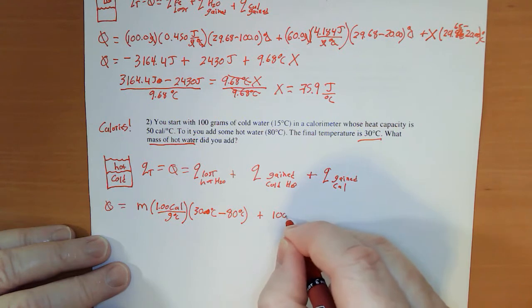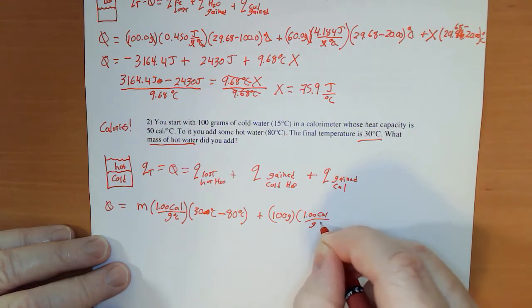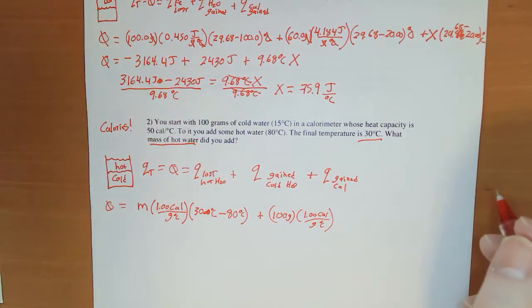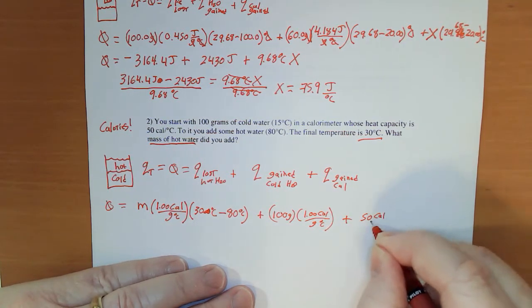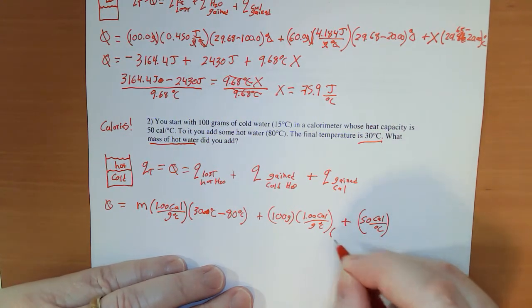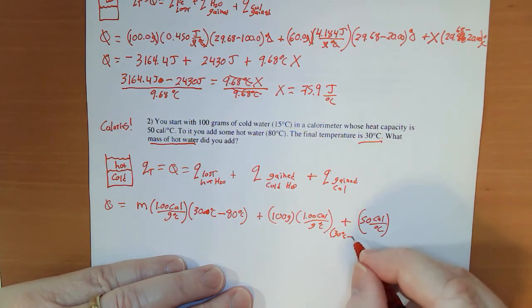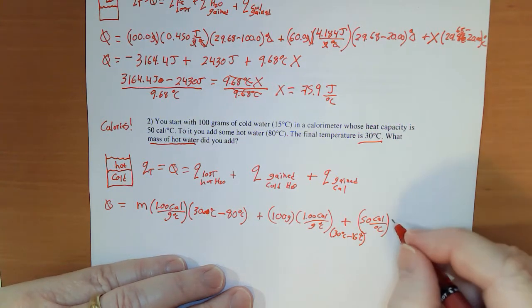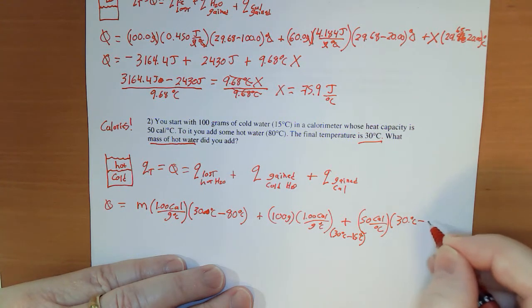Plus, for the cold water, I have 100 grams times 1.00 calories per gram degree Celsius. That's the heat capacity of water in calories, nice easy number to work with. And 50 calories per gram degree, times... I lost my temperature change in here, I'm sorry. It ended at 30 degrees Celsius minus it started at 15 degrees Celsius. And then here also a temperature change of 30 degrees Celsius minus 15 degrees Celsius.